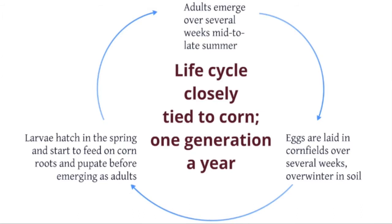Northern corn rootworms are a little bit more tolerant to cold temperatures than western corn rootworms. The amount of snowfall also affects survival of the eggs. Heavy snow cover keeps the soil warm and moderates extreme temperature changes. Soil moisture during egg laying in the summer also plays a role. In dry conditions when soils tend to crack, the eggs might be laid deeper and thus be less susceptible to extreme low winter temperatures.